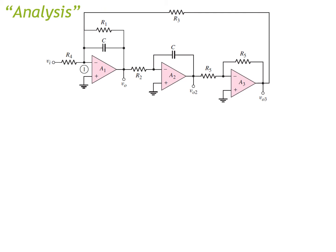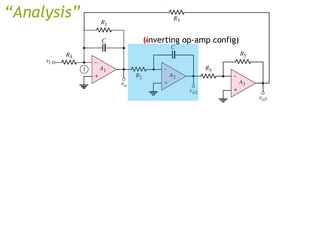After establishing the specification and approach, we go into analysis. First, consider this op-amp — we can figure out its voltage gain, which is the ratio VO2 over VO. This is an inverting op-amp configuration, so VO2 over VO equals negative impedance of C over impedance of R2, which simplifies to negative 1 over s·R2·C.